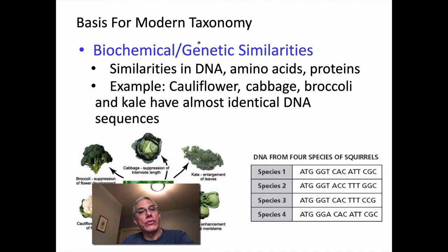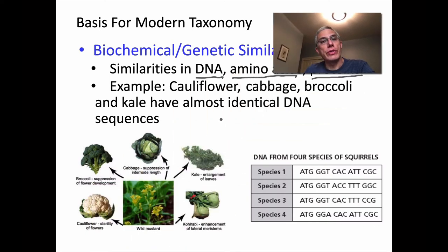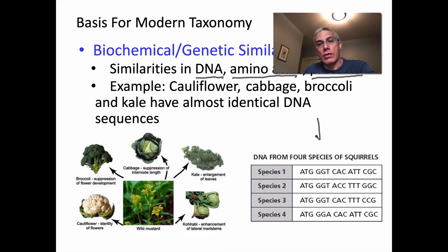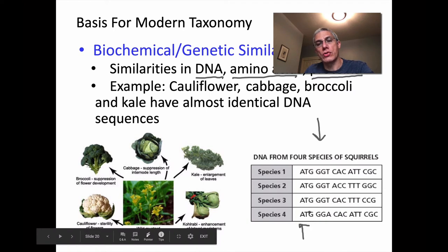Another piece of information we can use to classify organisms is biochemical and genetic similarities. Genetic similarities involve DNA, while biochemical similarities might involve amino acids and larger proteins. For example, if you do a genetic analysis of cauliflower, cabbage, broccoli, kale, and the wild mustard plant, you find they have almost identical DNA sequences — very minute differences that are enough to produce all four vegetables you find in the grocery store.